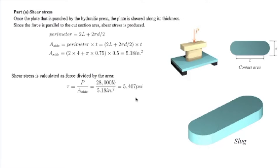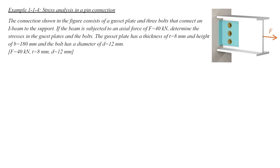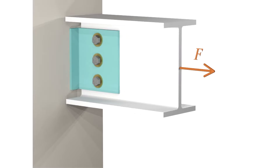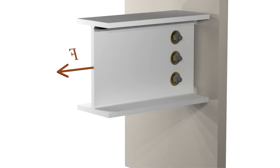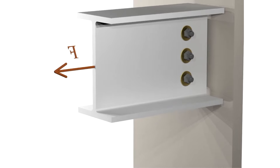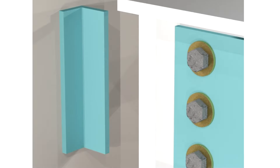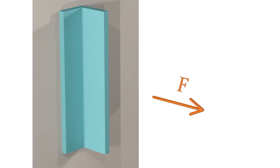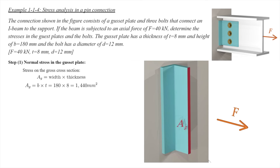In the next example we look into a pin connection, very common in structural engineering. We focus on the gusset plate, shown in blue, and three bolts connecting the I-shaped beam to the support. The axial force f passing through the gusset plate to the left support is perpendicular to the gusset plate, so it produces normal stress. Stress is force divided by area, where the area is the thickness multiplied by the height of the section — called A sub g, the gross cross-section area.